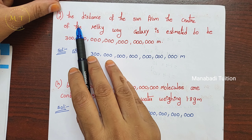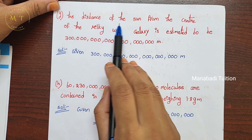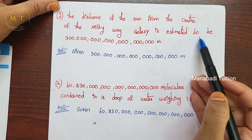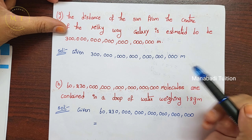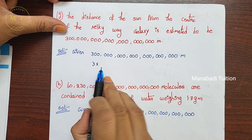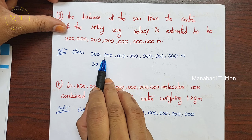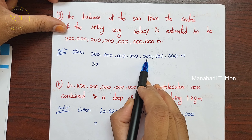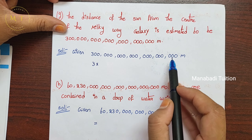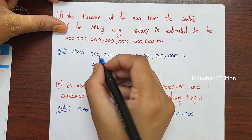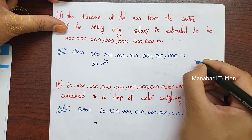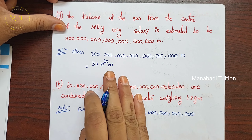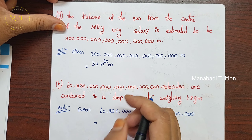Next, part F — the distance of the Sun from the center of the Milky Way Galaxy is estimated. Write the given number: 3 into. Count the zeros: 1 through 20 — there are 20 zeros, so write 10 power 20. The unit is meters (m). The answer is 3 into 10 power 20 m.